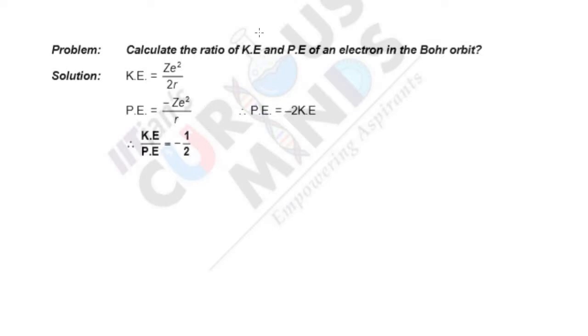Hello friends, let us solve this problem. Calculate the ratio of kinetic energy and potential energy of an electron in the Bohr orbit.